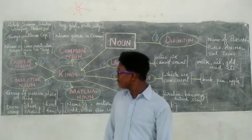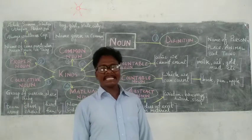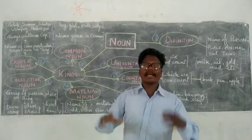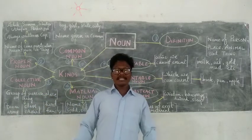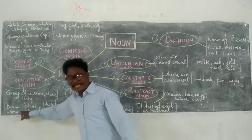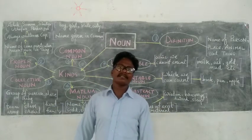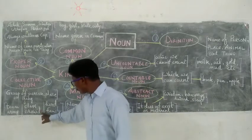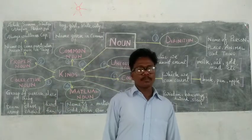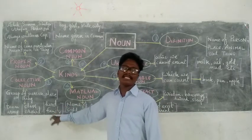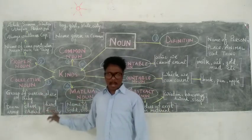Third: Collective Noun. What is a collective noun? A collective noun is a group of persons, places, animals or things. It is a group or collection of something. Team is a group of players. Army is a group of soldiers. In one class there are many students. Crowd is a group of people. Herd is a group of animals. Family is a group of members — many members make one family. So these words are collective nouns.